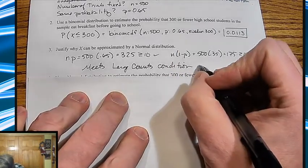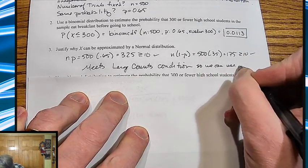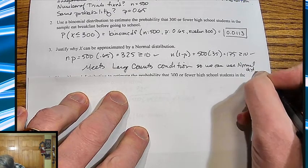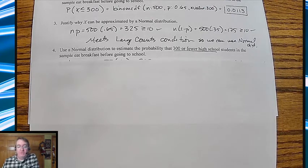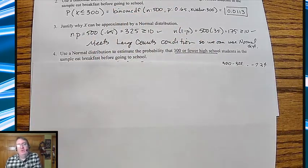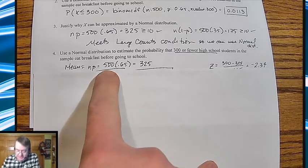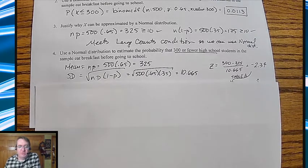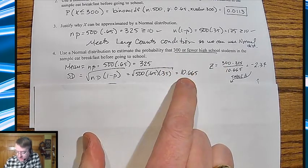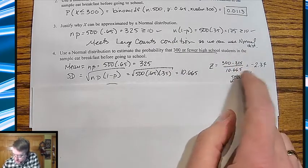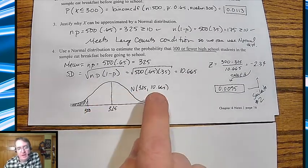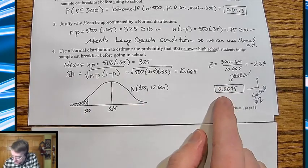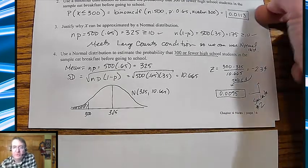There, now it seems very, very formal. So use a normal distribution to estimate the probability that 300 or fewer high school students eat breakfast before school. So now, I mean, I know we did it up here as binomial. We're going to assume, hey, if we did the normal instead, what would it look like? So mean is 325, standard deviation by using the formula N times P times 1 minus P and taking the square root of that is 10.665, which then going through the Z score of negative 2.34. And if you use table A, and of course I do have my drawing, don't worry. I do have it labeled. Don't worry. We end up getting 0.00915 or 0.0095, which is really relatively close to our answer up there.